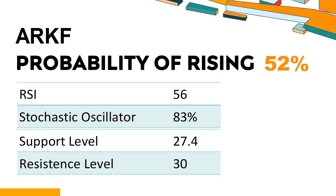The current stochastic oscillator of ARKF is 83%. When the stochastic oscillator rises above the 80 level, it is usually considered overbought, indicating that the stock may be due for a price pullback. An overbought condition occurs when a stock's price rises too fast and too high in a short period of time and can be a sign that buying pressure has exhausted.